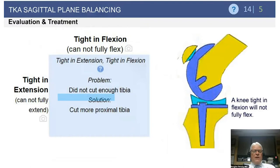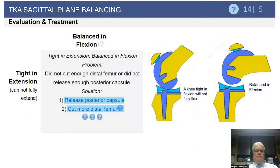If you have a knee that is tight in extension and tight in flexion, typically the problem is that enough tibia was not resected. You can typically solve this simply by resecting more proximal tibia.